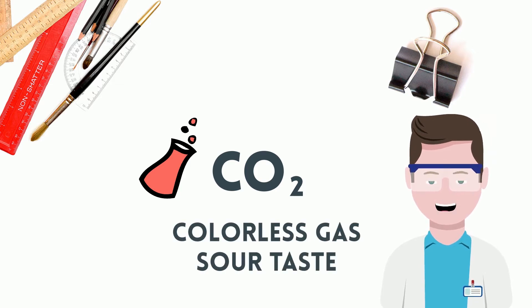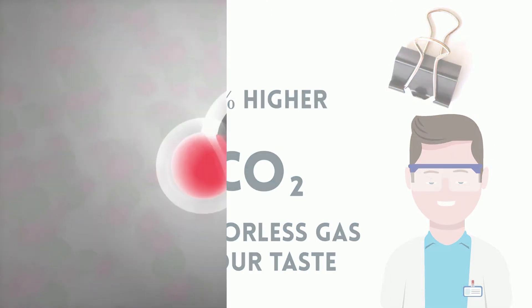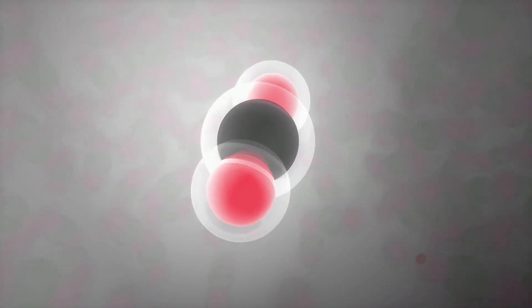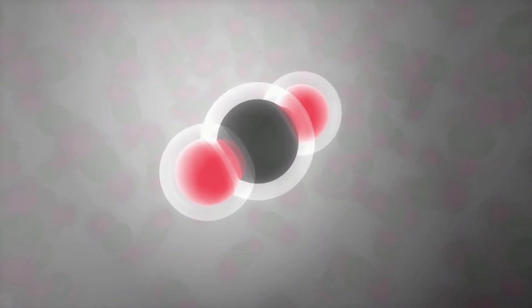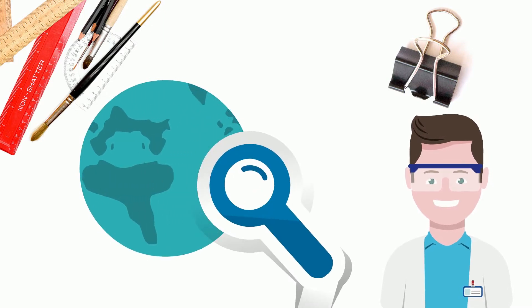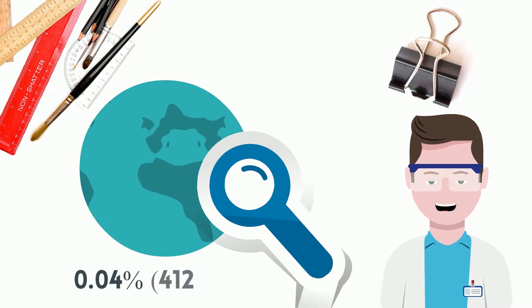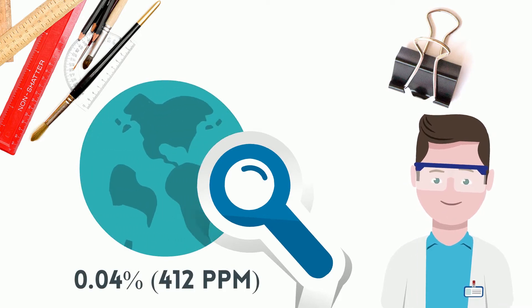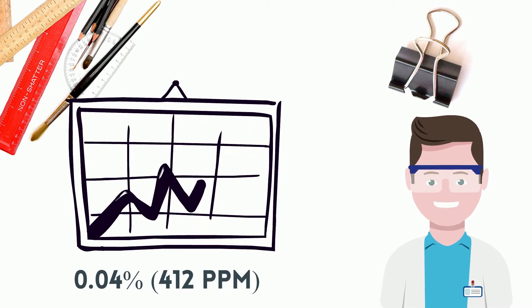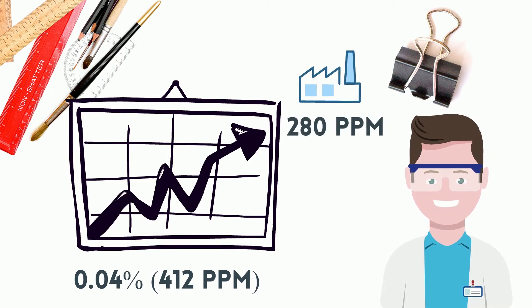Its density is about 53% higher than that of dry air. These gas molecules consist of one carbon atom and two oxygen atoms connected by chemical bonds called covalent bonds. It occurs naturally in Earth's atmosphere as a trace gas. The current concentration is about 0.04%, 412 ppm by volume, rising from pre-industrial levels of 280 ppm.